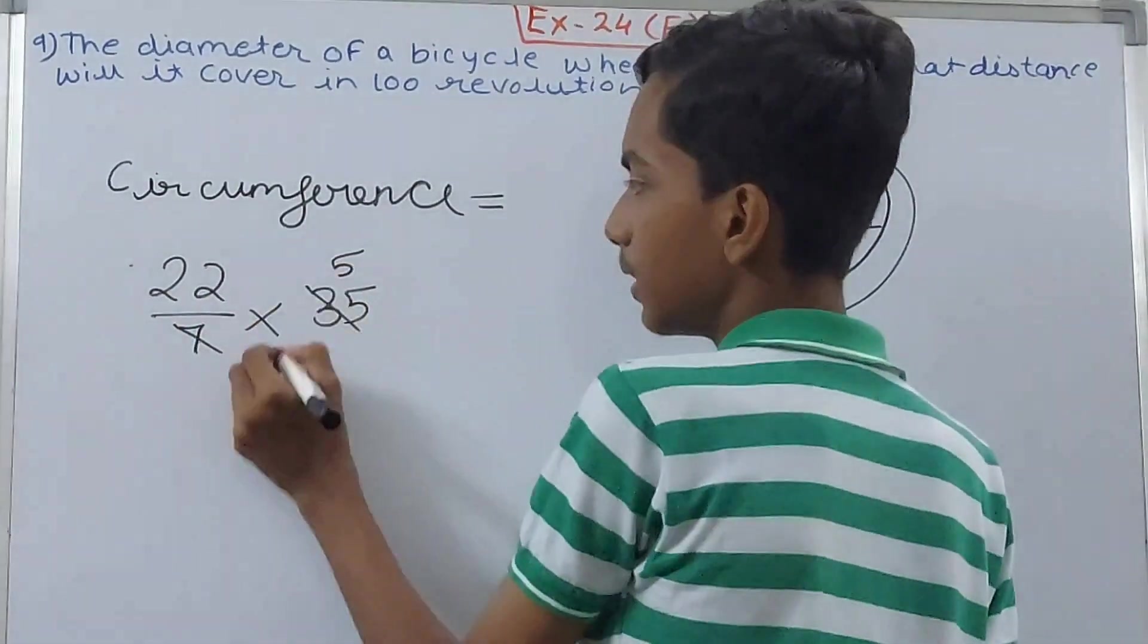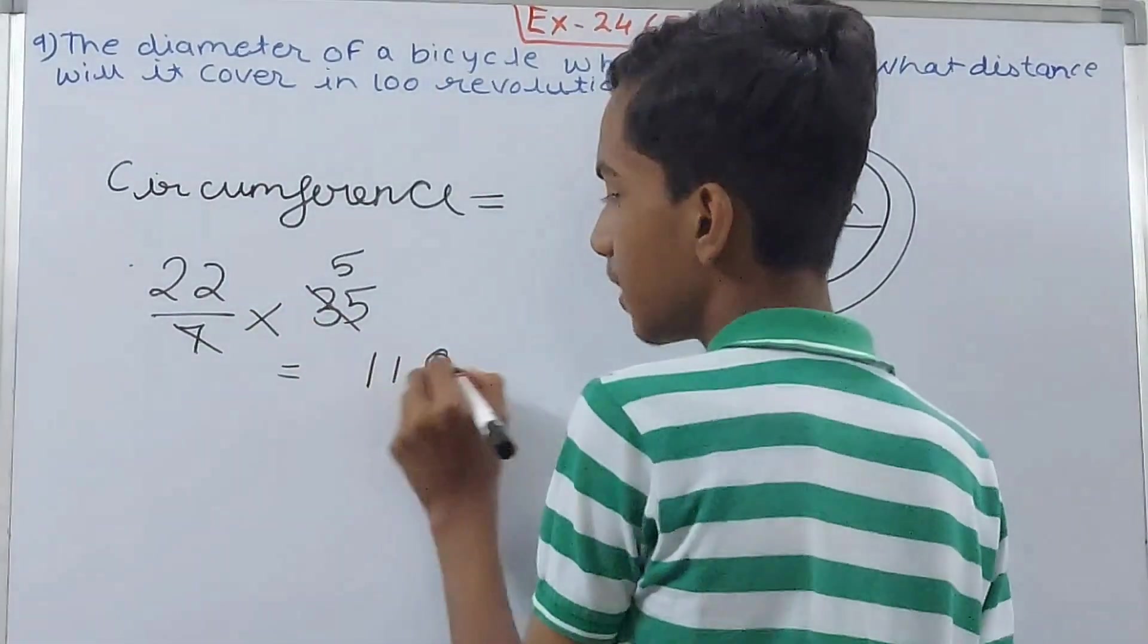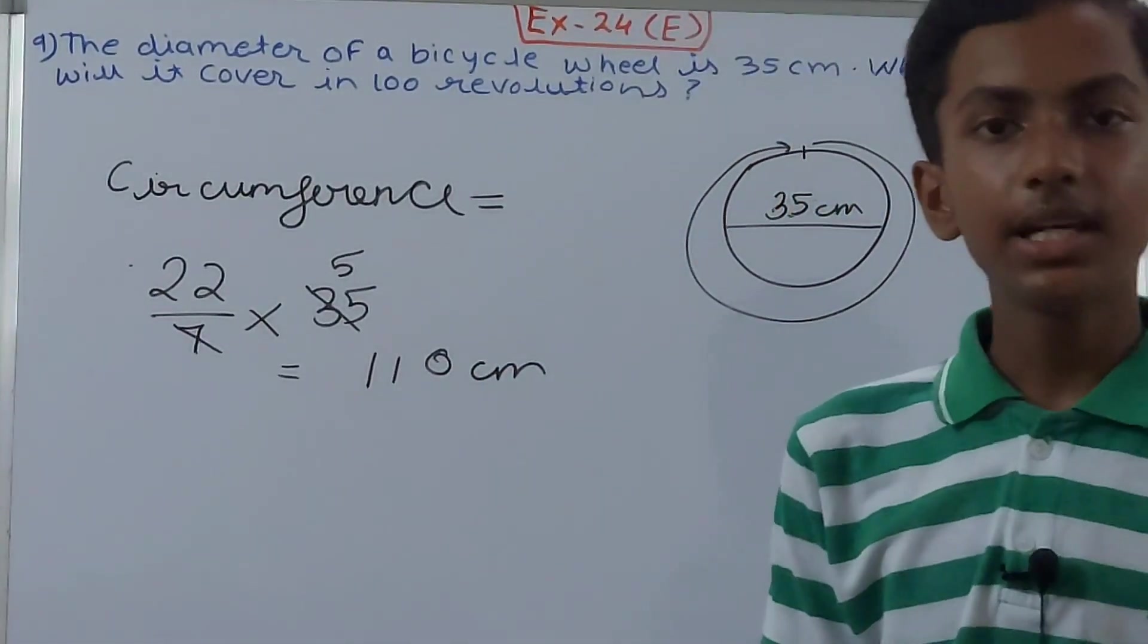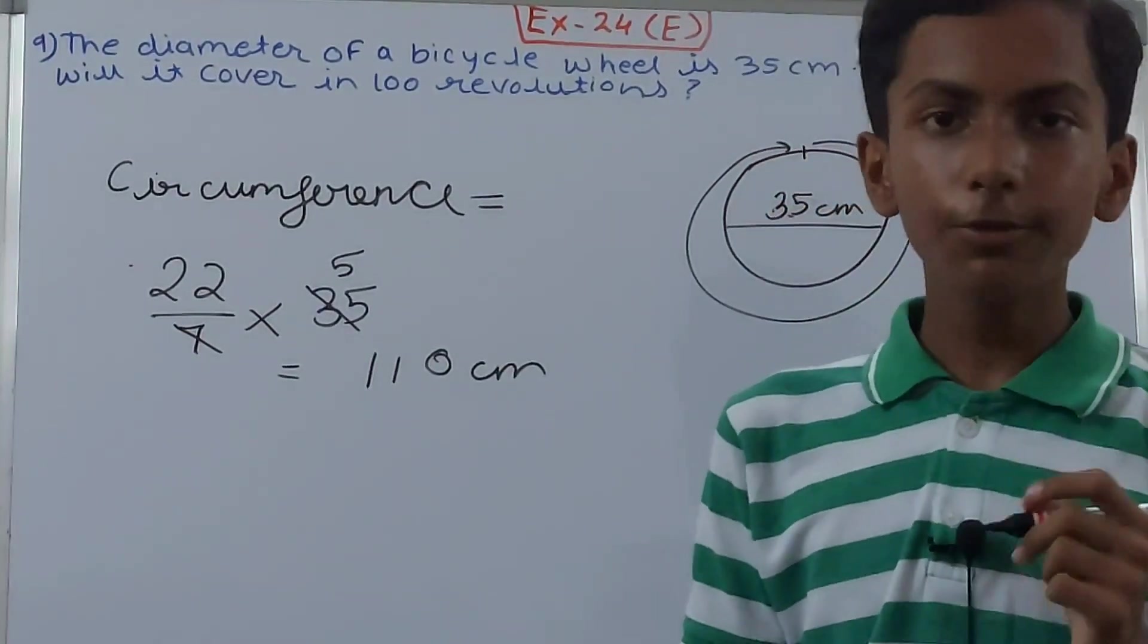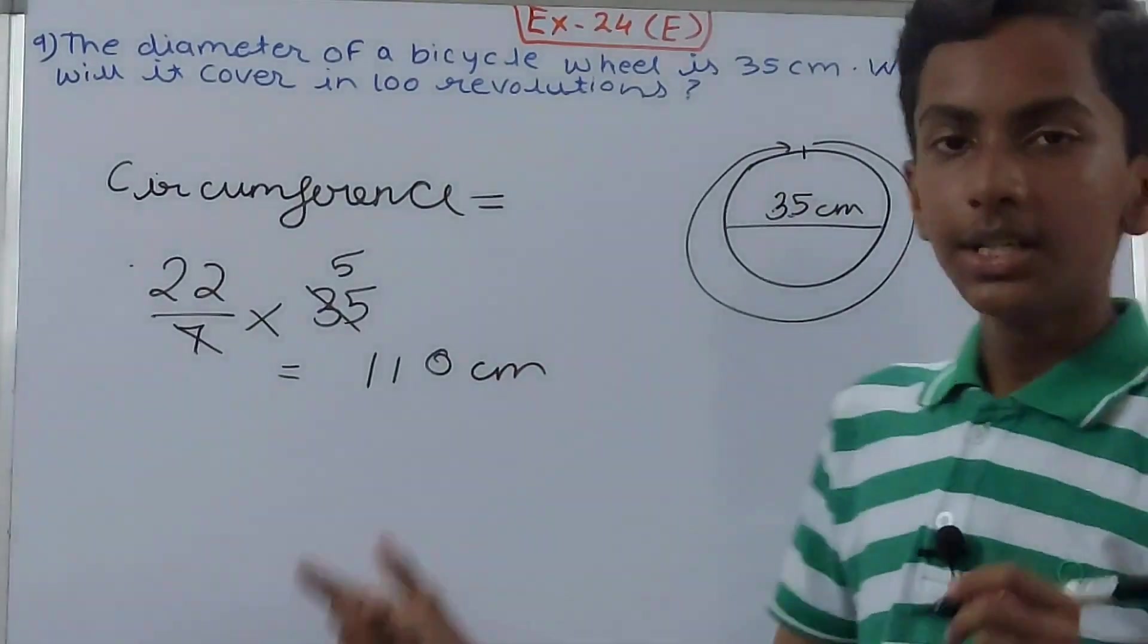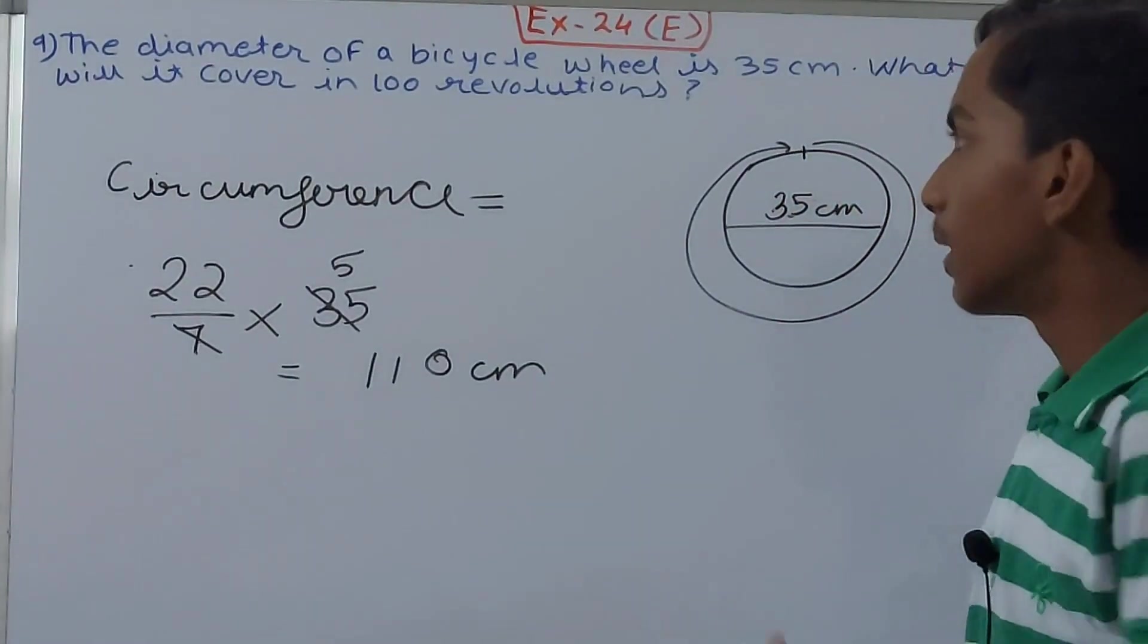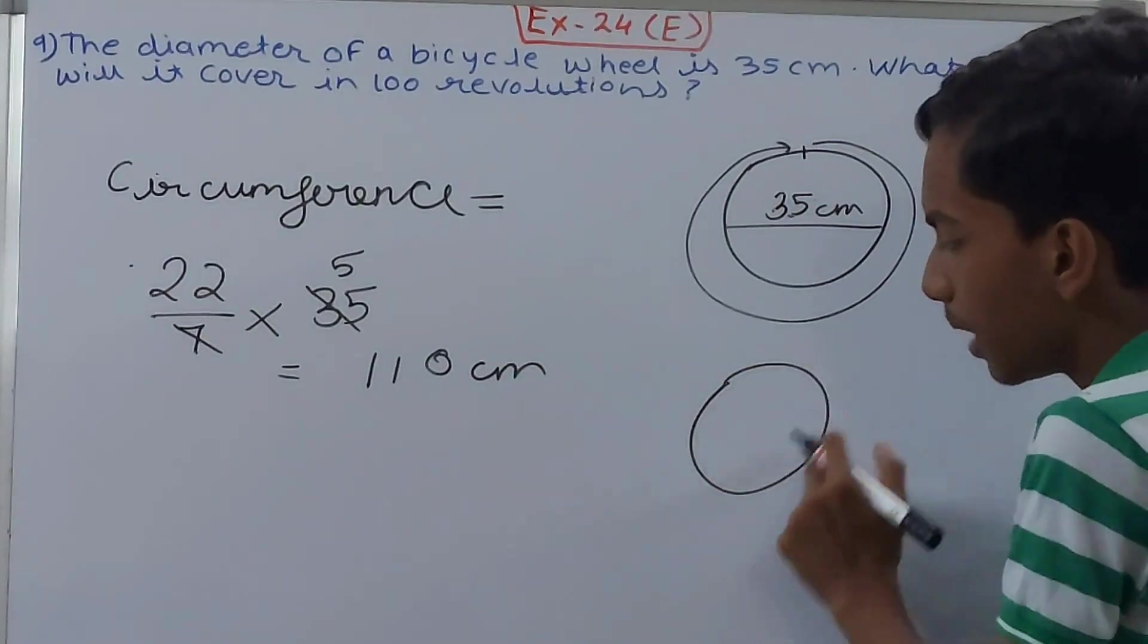This is the circumference. Now we'll calculate the distance it travels in 100 revolutions. So this 110 centimeters is the distance of one revolution. Suppose this is the wheel, so the entire boundary is 110 centimeters.